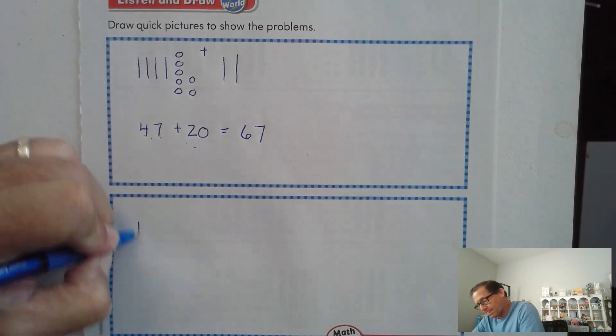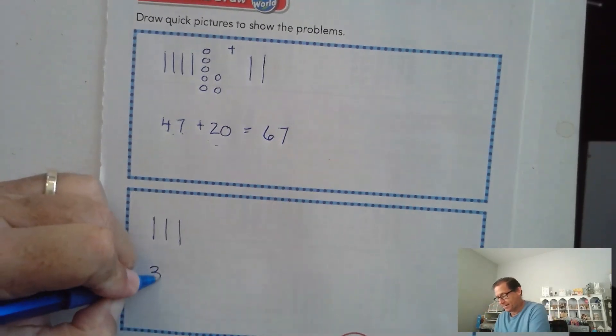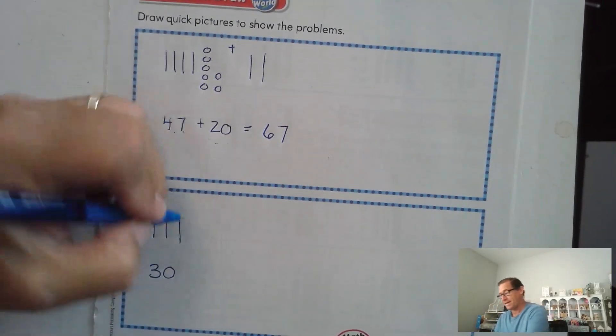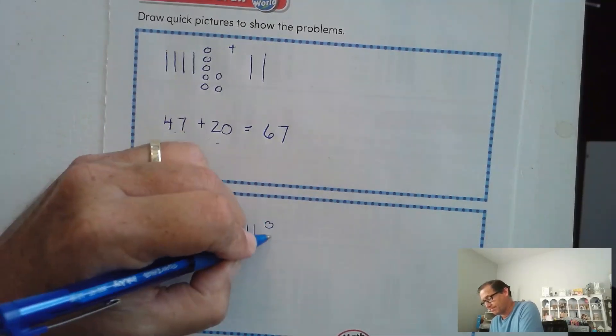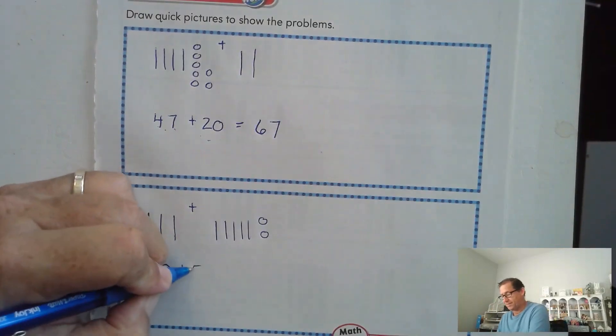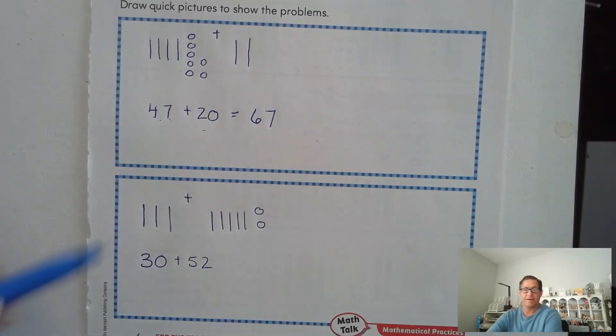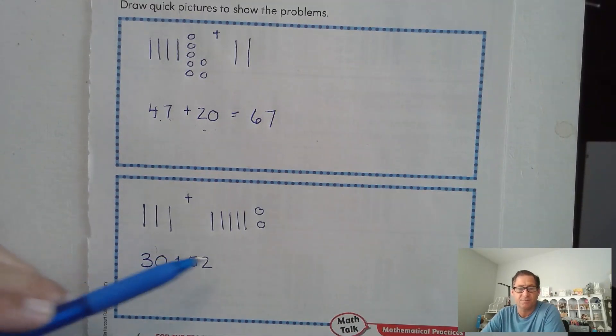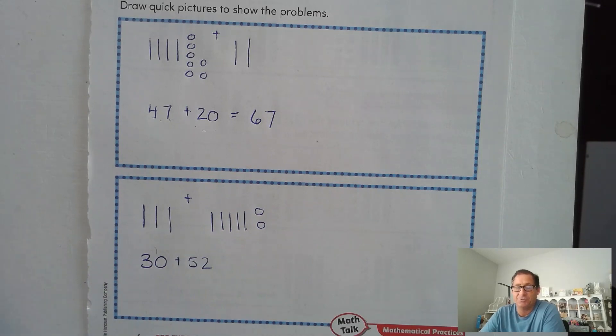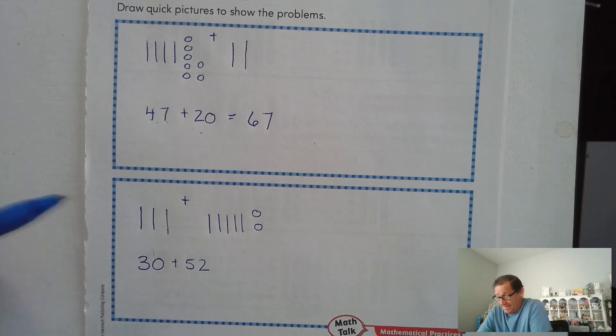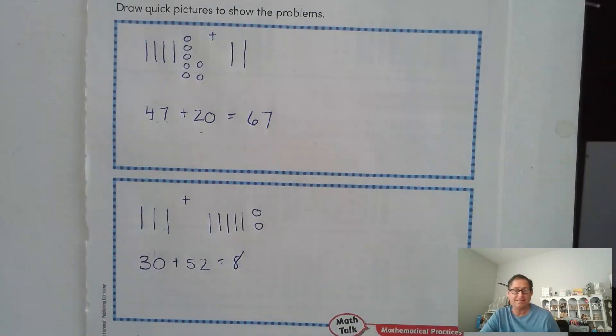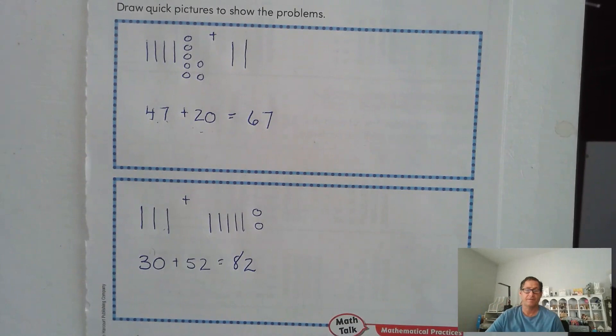Alright, so we know that he had 30 stickers and he bought 52 more. So we have the math problem, 30 plus 52. Well, again, we don't see any ones in the number 30, so the ones aren't going to change. There's nothing to add to the ones. So I don't need to make a 10 on either one of those numbers, right? On either one of the addends. So how many 10s do we have total? We have three here and we have five there. Five and three is eight. So we have eight 10s and two ones, 82.